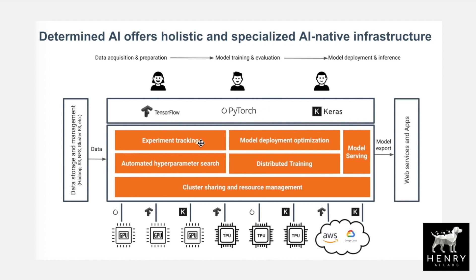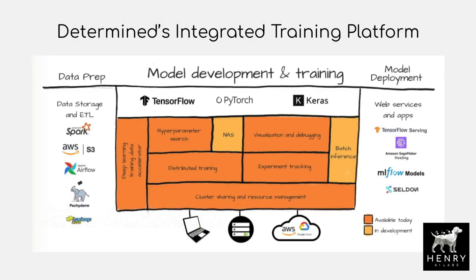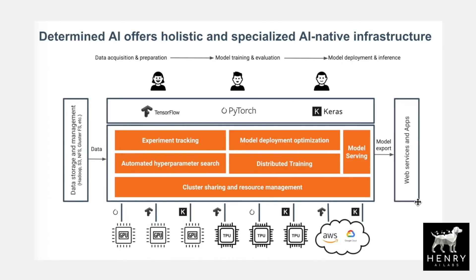To summarize, the platform provides experiment tracking, automated hyperparameter search, cluster sharing and resource management, distributed training, and model deployment optimization and serving. The final column covers actual model deployment services that are outside the scope of Determined AI.